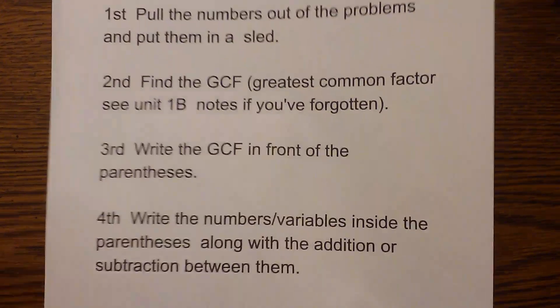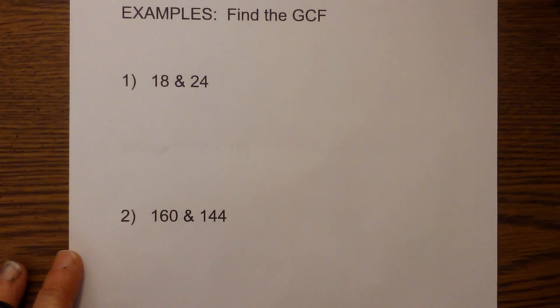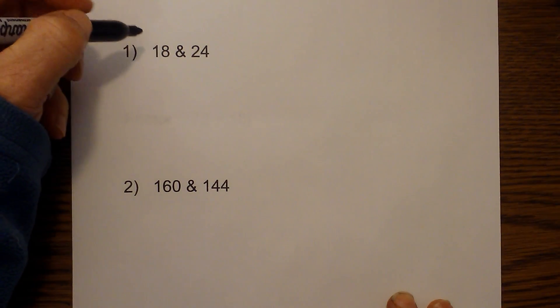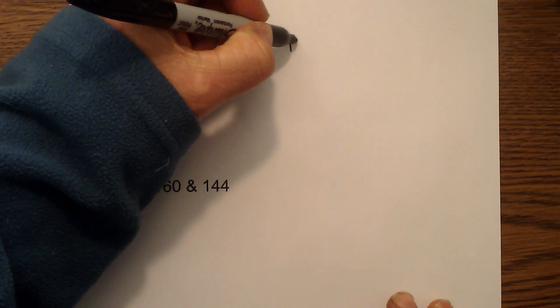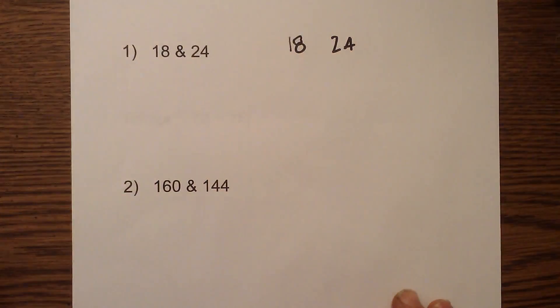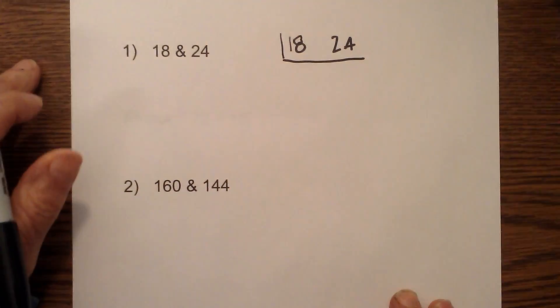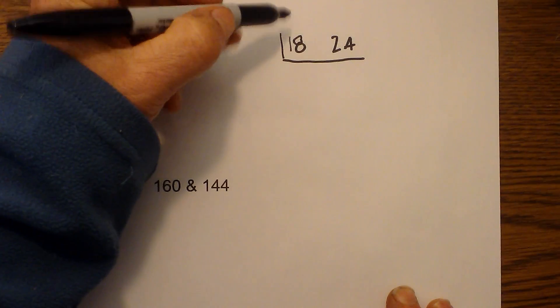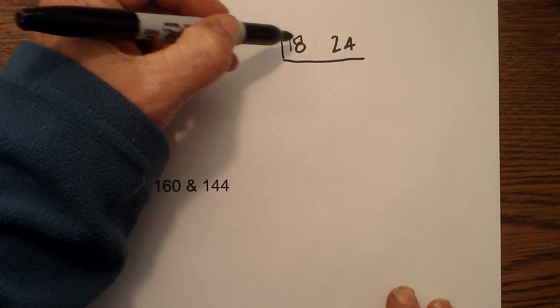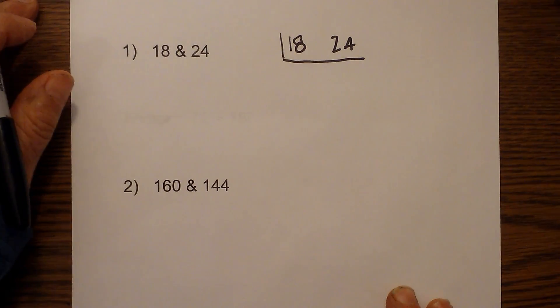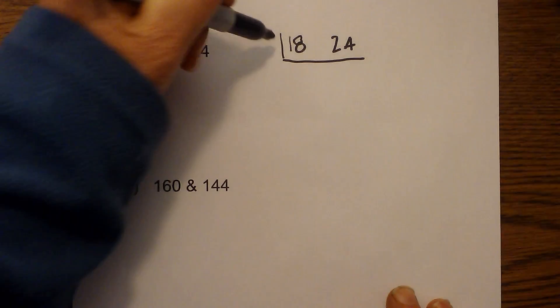Before we get started let me refresh your memory on what I mean by 'put it into a sled.' For instance, I need to find the GCF, or the greatest common factor, of 18 and 24. Remember, the GCF is the largest number that will divide into both numbers evenly. Here's the sled — the number on the outside is what will divide evenly into both numbers.